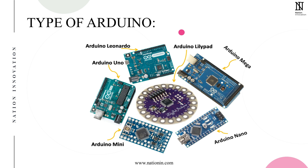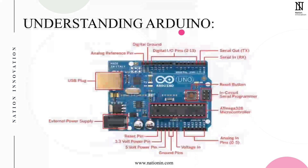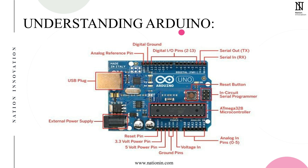Now let's look at what the Arduino board looks like and what it contains. First, there is a USB Type-A plug, which is used to transfer data to the Arduino board as well as provide power. There is also an external power supply connector — the Arduino works on a DC power source ranging from 5V to 12V. At the bottom, you can see reset pins, 3.3V pins, 5V pins, ground pins, and a voltage-in pin, which can be used to power the Arduino directly.